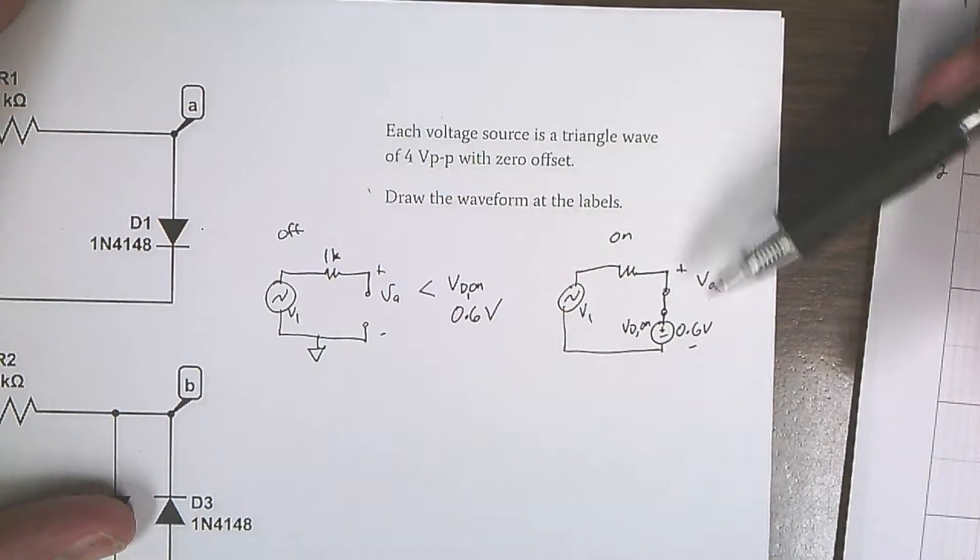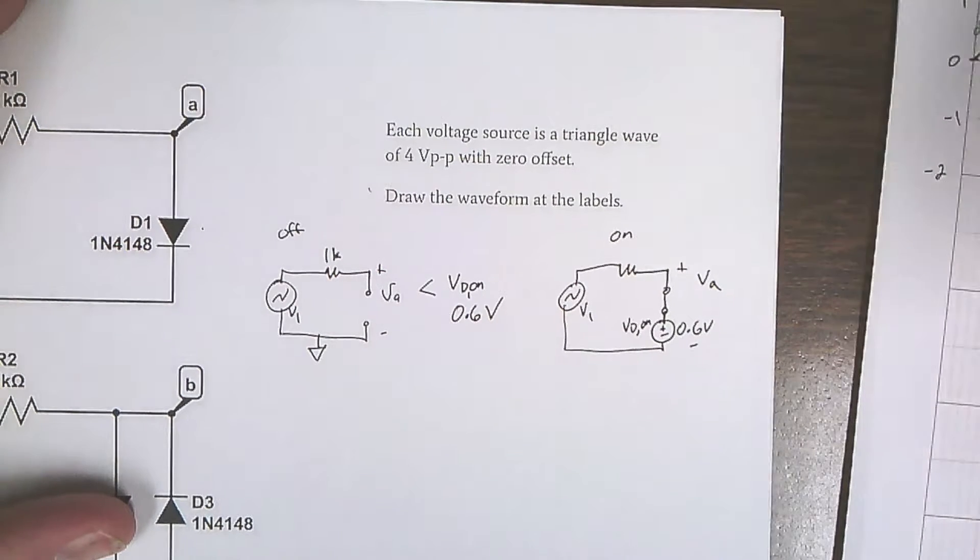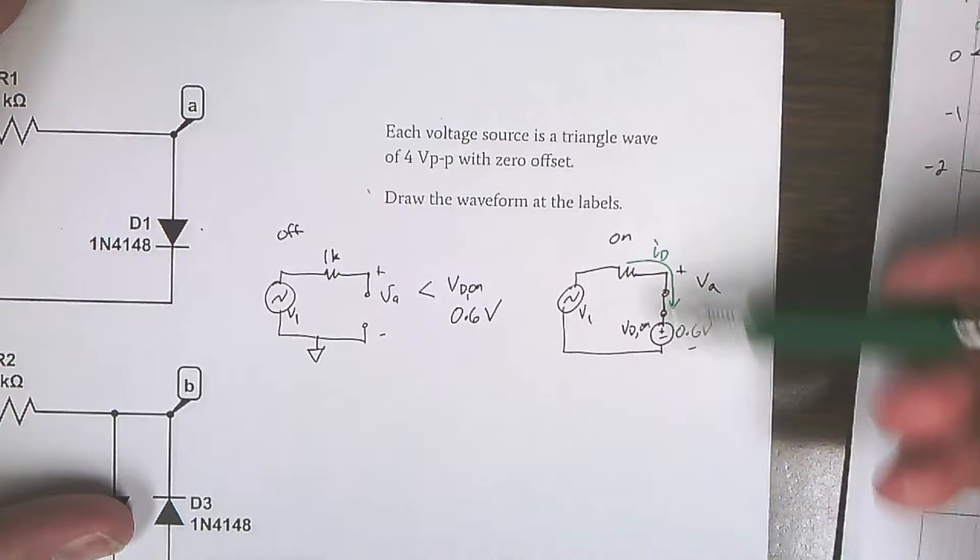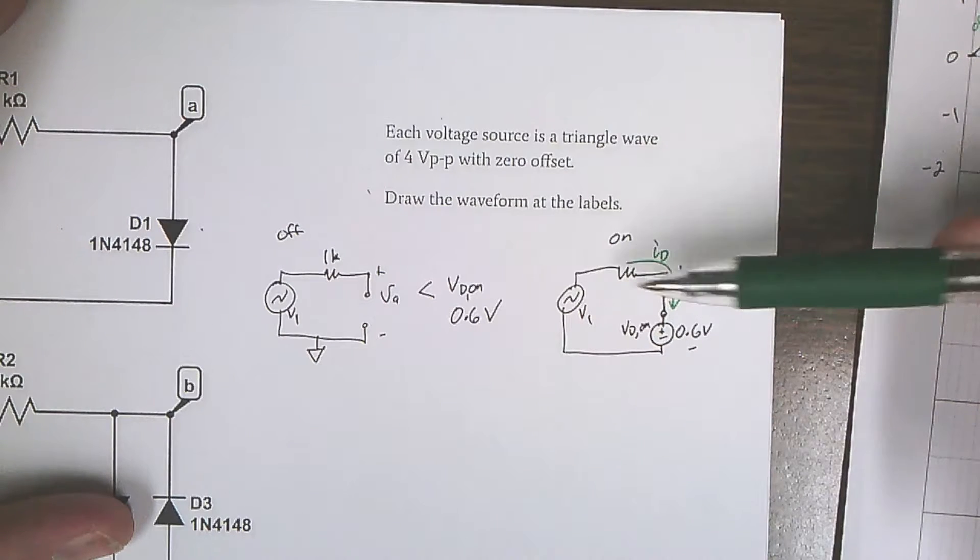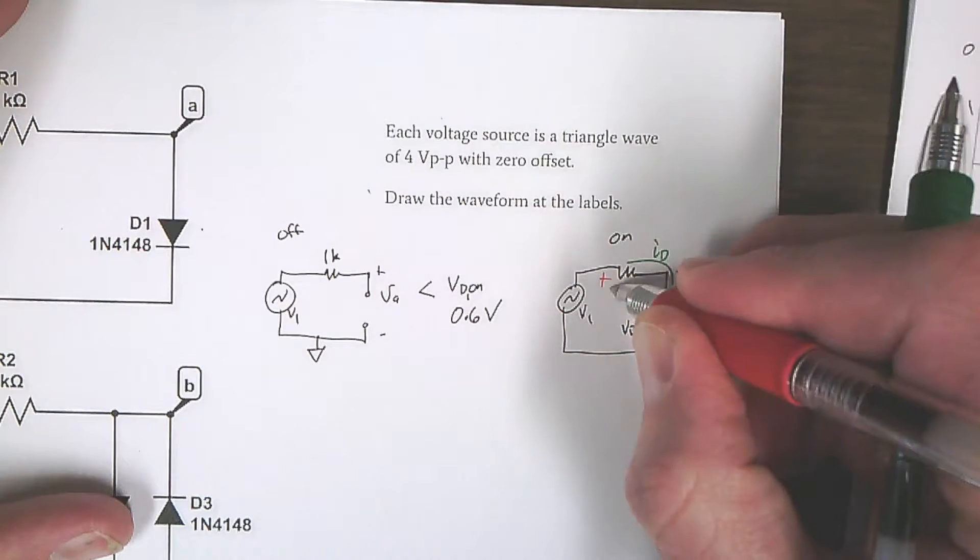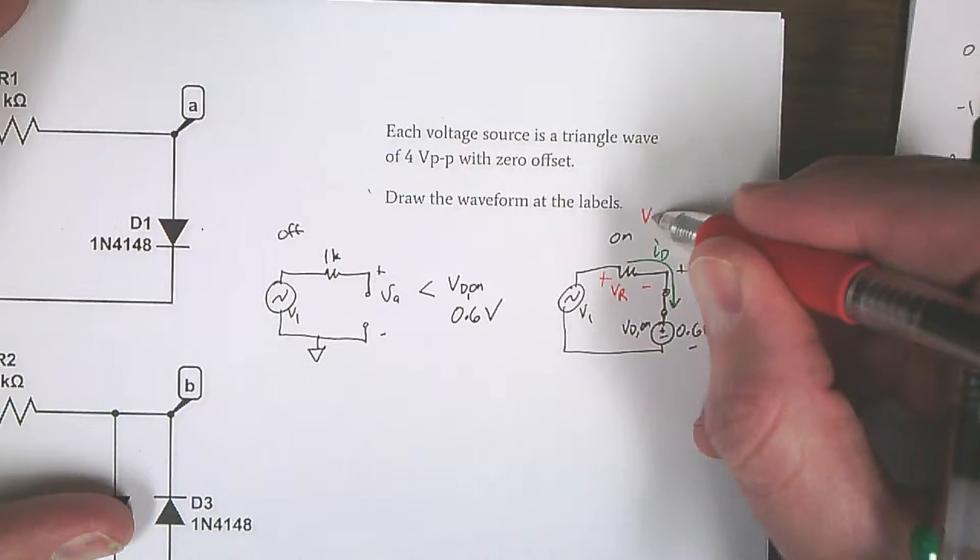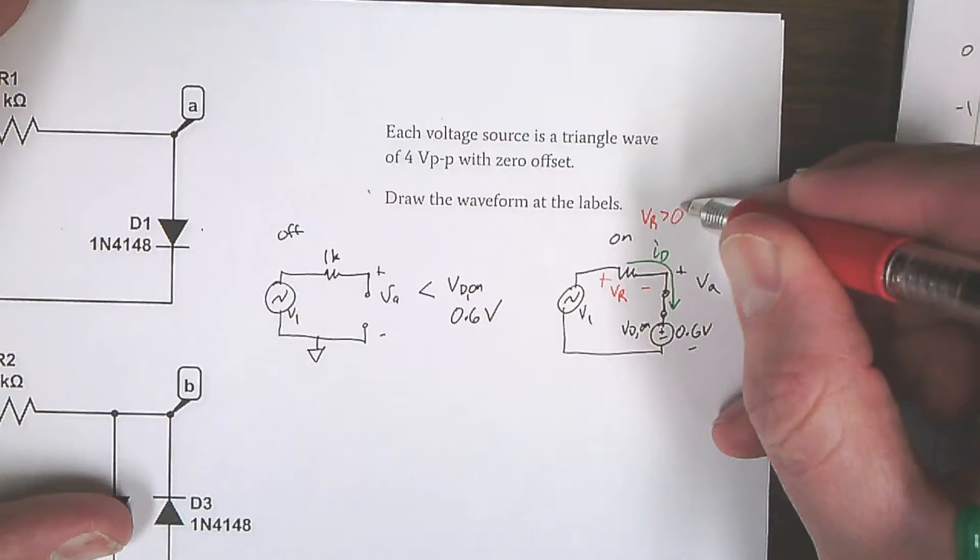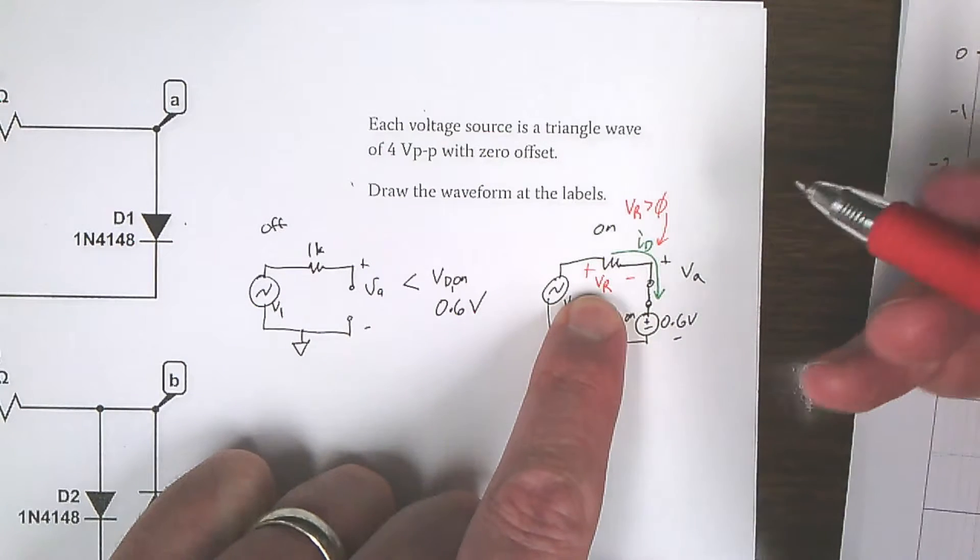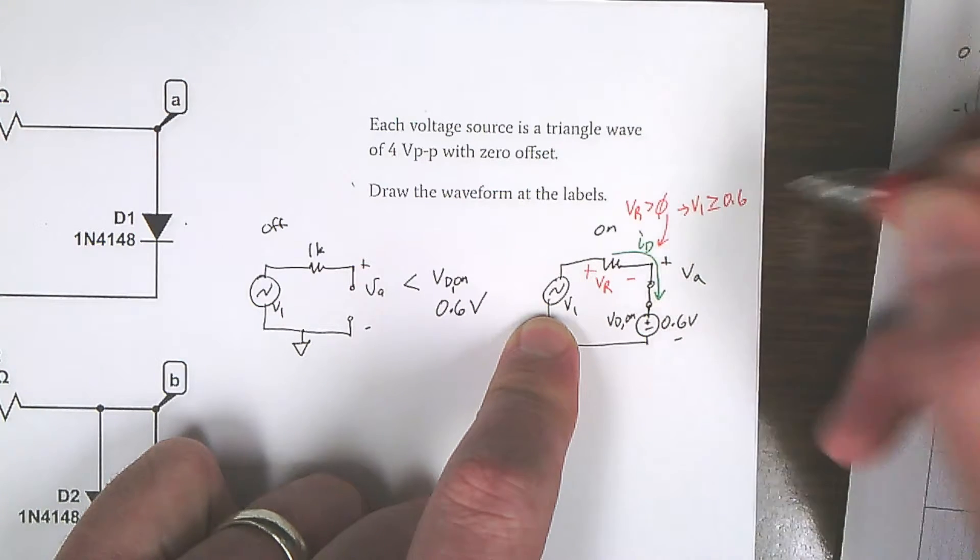This solution is really easy because va is simply equal to 0.6 volts if this diode is on. Remember, when this diode is on, current must flow that way. There's only one loop, so one current flows here. Current will flow positive when this voltage across this resistor, vr, is positive. So vr is greater than 0 means the current is positive. The only way for vr to be positive is for v1 to be greater than or equal to 0.6 volts.